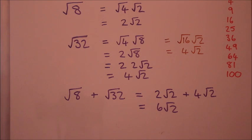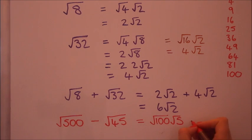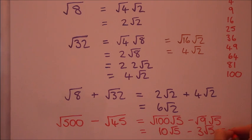It's your turn again. Have a go at simplifying root 500 and root 45, and then see if you can take them away. Did you get it right? Well done.